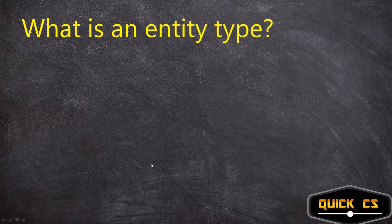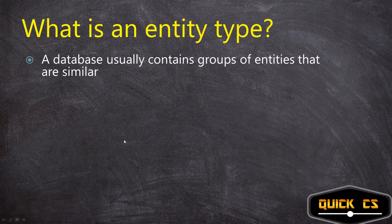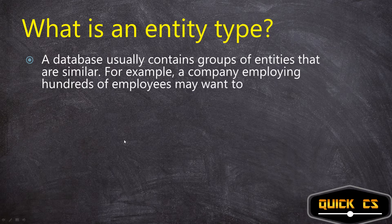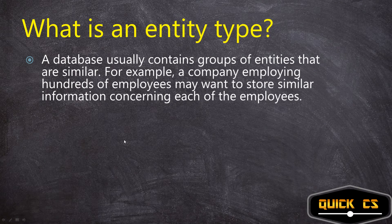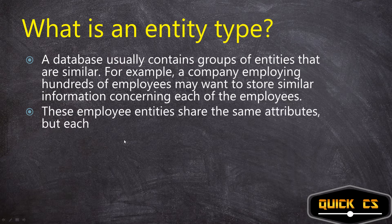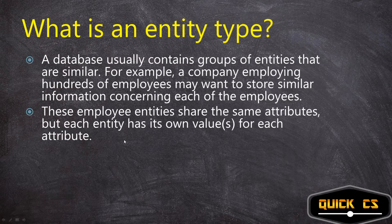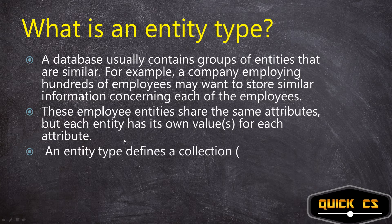Now that brings us to what is an entity type. Usually a database contains a group of entities that are similar. For example, a company has lots of employees and the employee information is usually similar — the company stores similar information related to those employees. These employee entities share the same attributes, but each entity has its own values. So an entity type defines a collection or set of entities that have the same attributes.